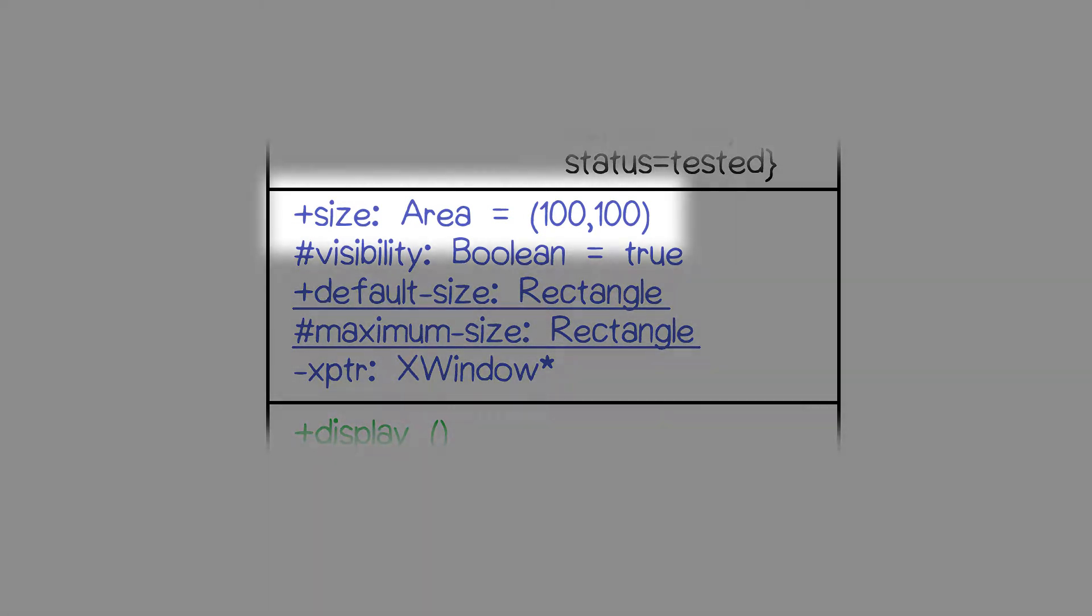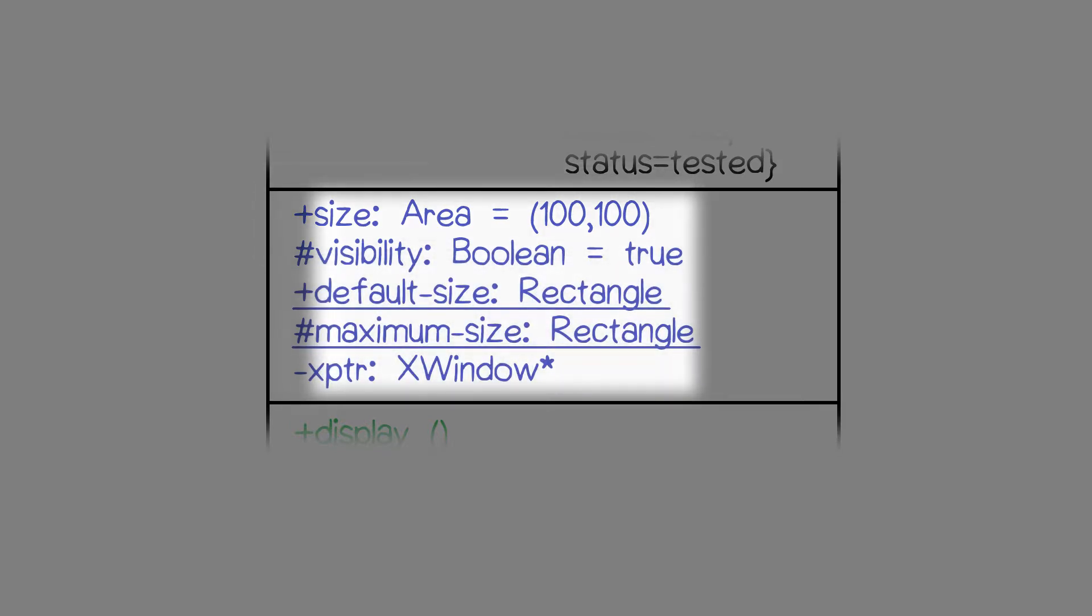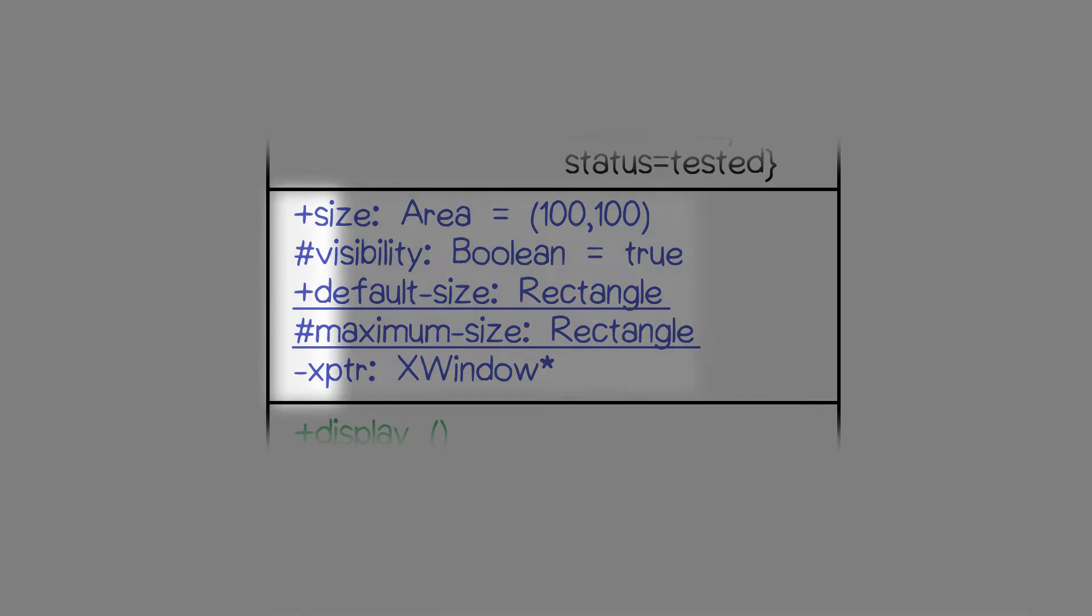You'll see that there are different attributes described. All of them have names, they have types, and they may have some other symbols that describe how the names can be accessed from other classes.